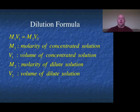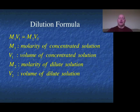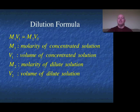Here's our dilution formula: M1V1 = M2V2. M1 is the molarity of your concentrated solution — sometimes we call this the stock solution. V1 is the volume of that solution. M2 is the molarity of your dilute solution, and V2 is the volume of the dilute. Basically, the concentration times how much is there doesn't change with dilution, so the new concentration times the new volume equals the same ratio — these two sides are equal.